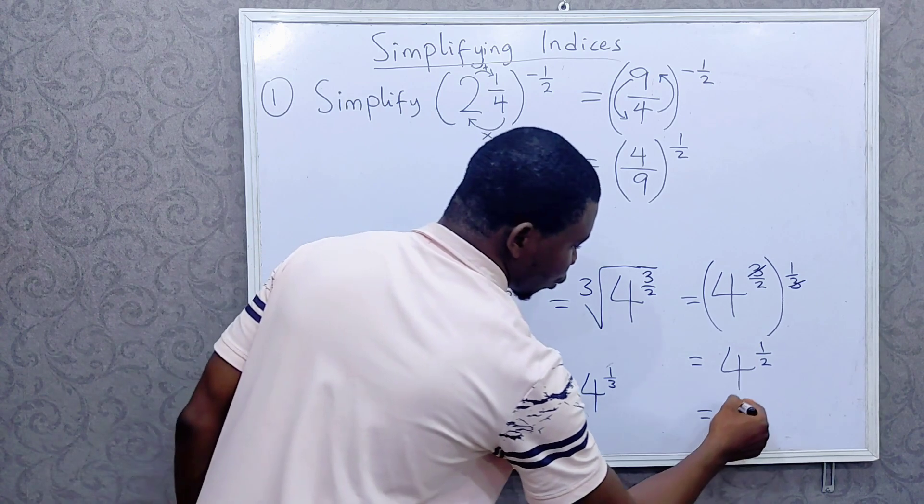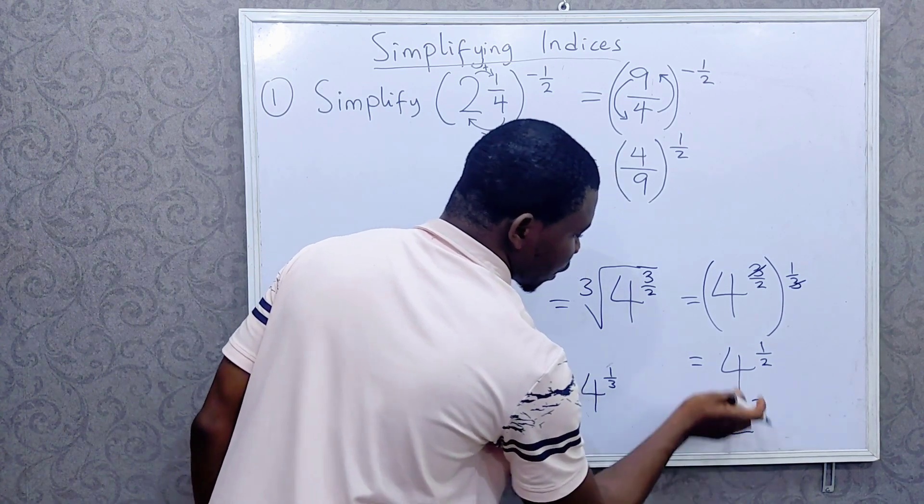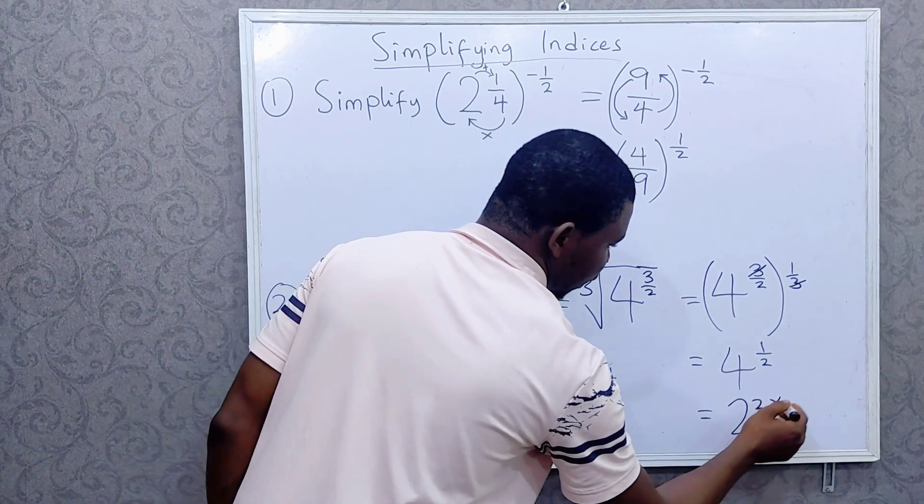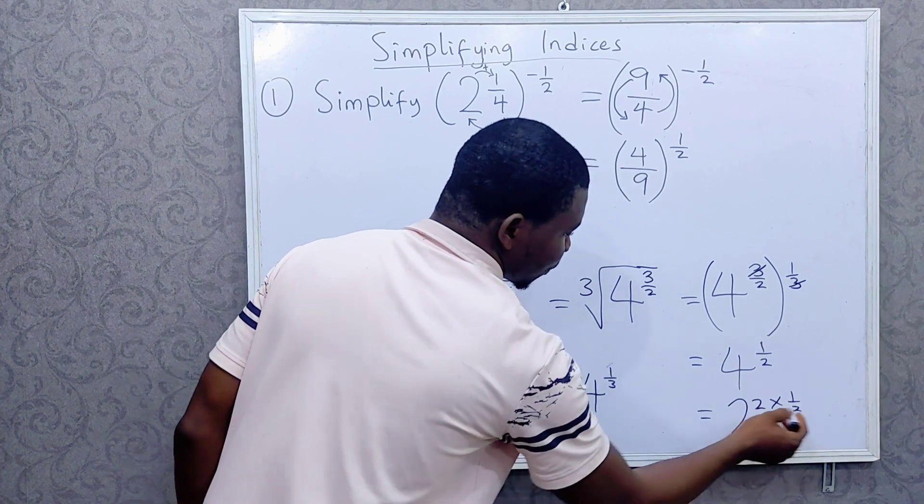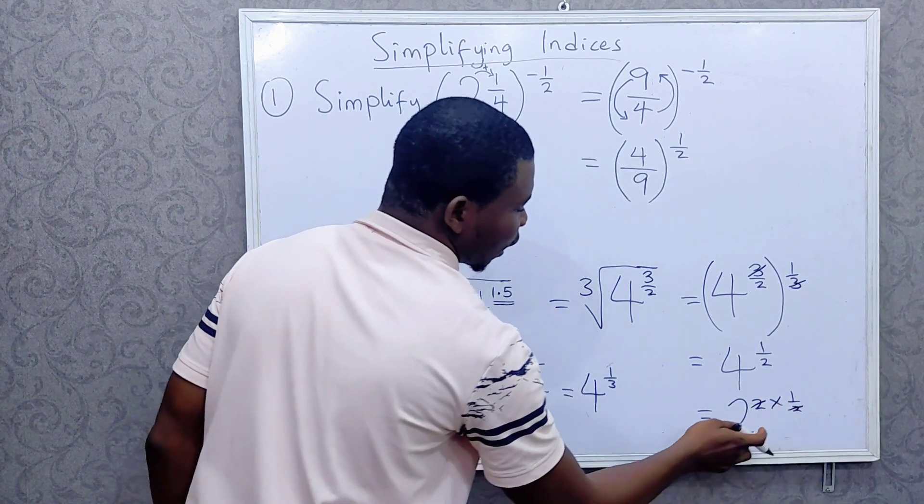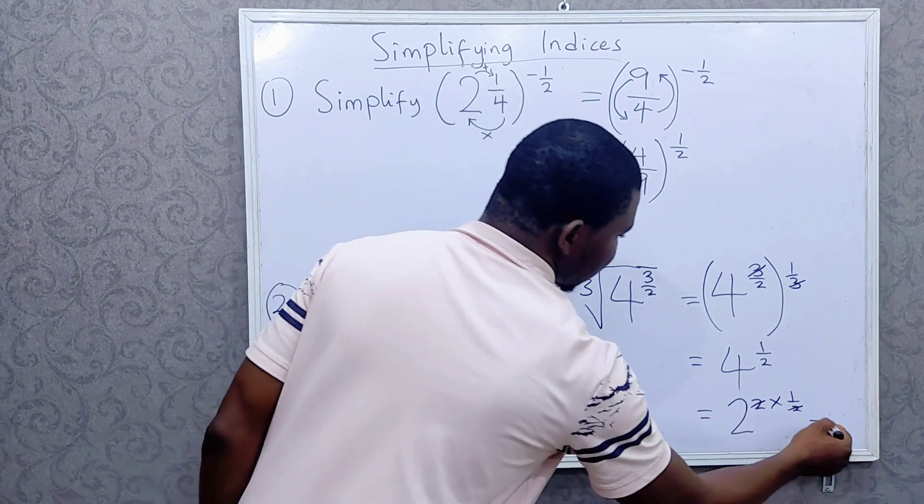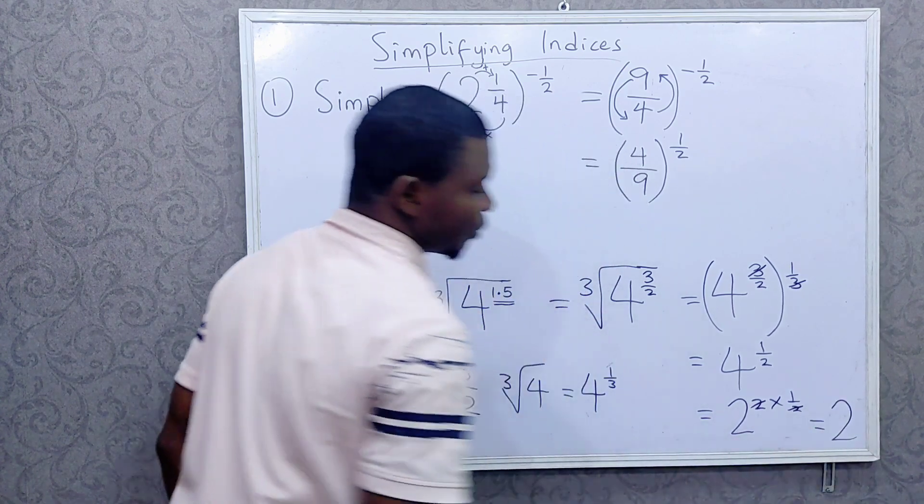I can write this as 2 raised to power 2. 4 is the same thing as 2 raised to power 2, then times this power, 1 over 2. This will cancel and we are left with just 2. So our answer is 2.